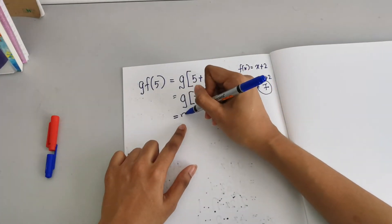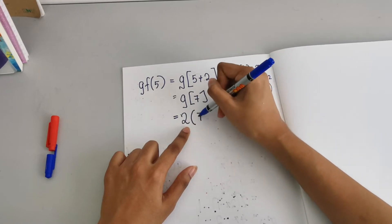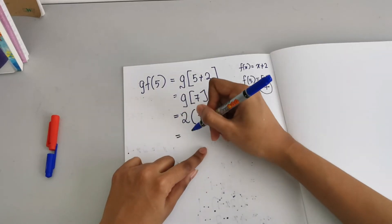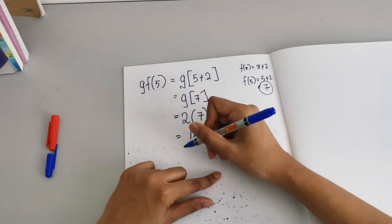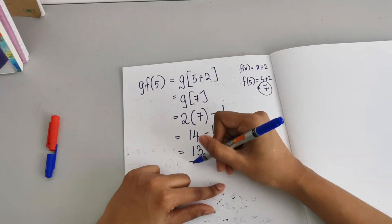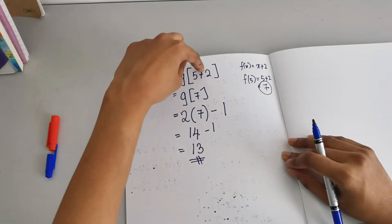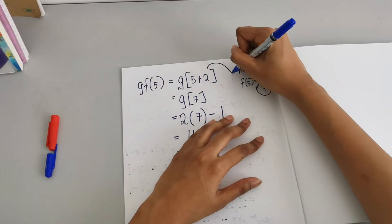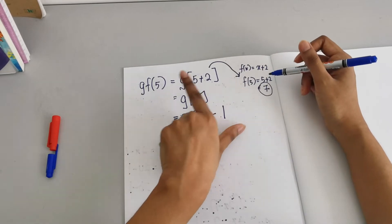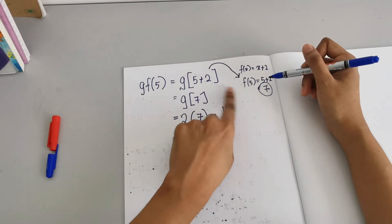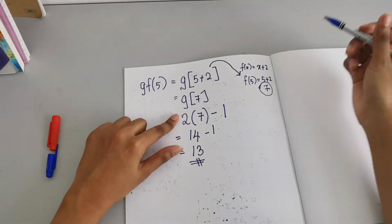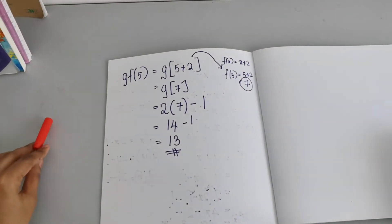2 × 7 = 14, minus 1 = 13. So g(f(5)) = 13. What we did here was substitute the value, find the value first using f, and then use that value for function g. Let me give you another example.